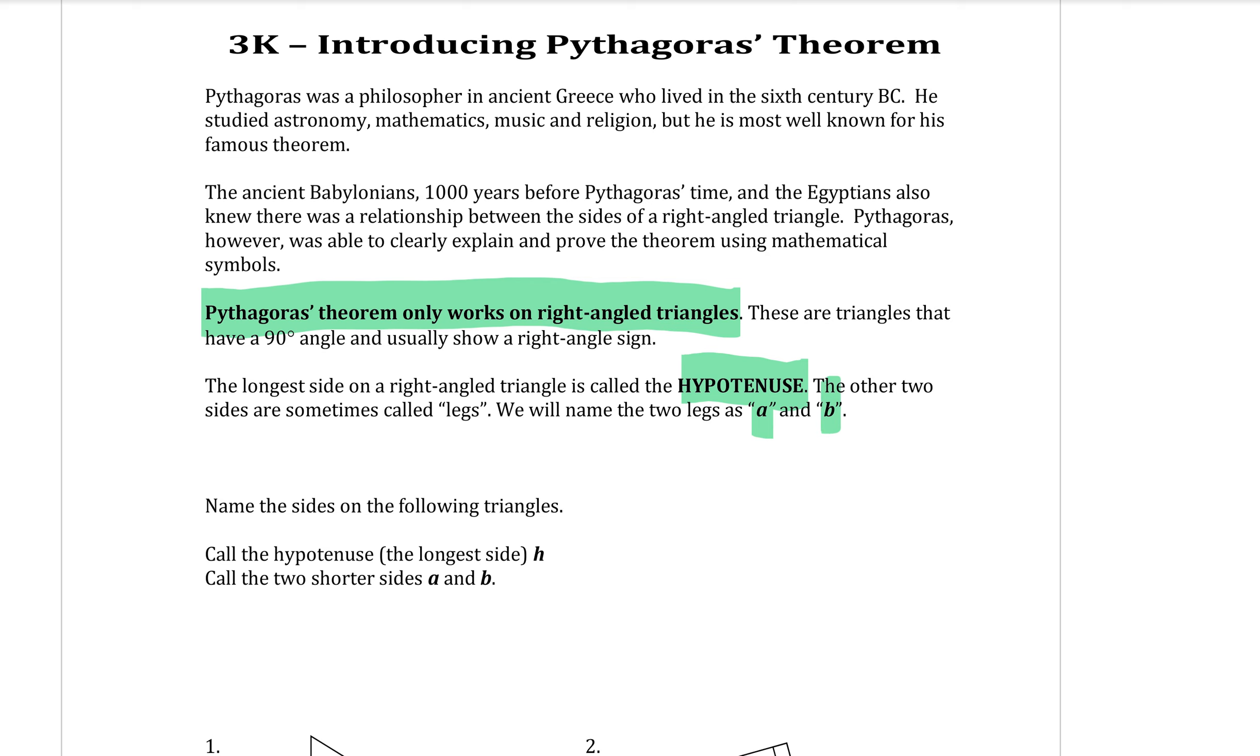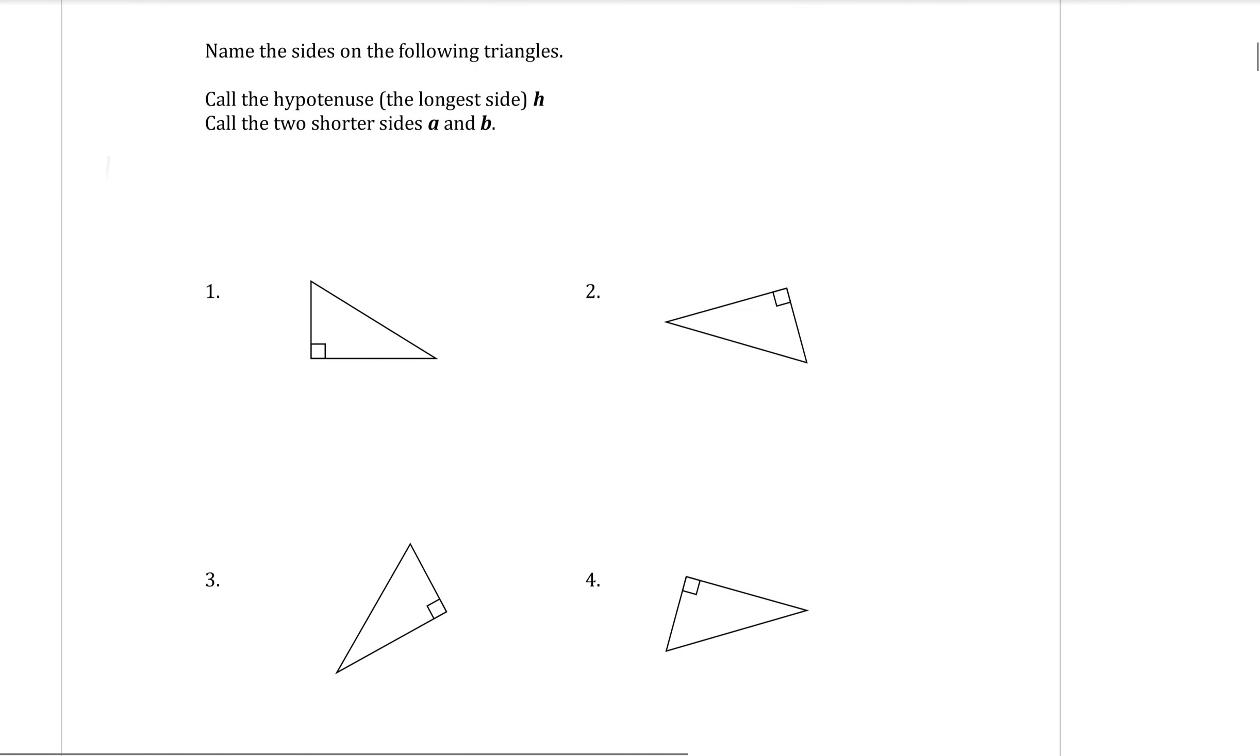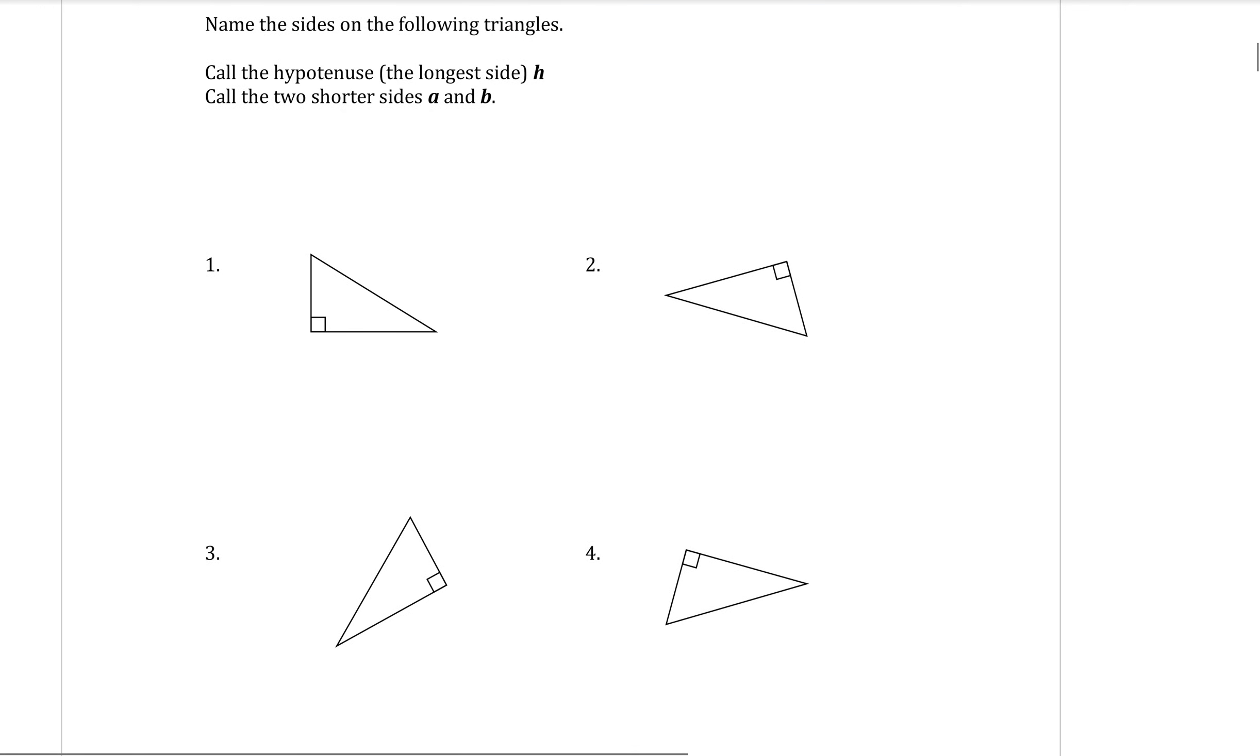So before we learn Pythagoras' theorem, we're just going to practice labelling the sides of a triangle. So the longest side, which is called the hypotenuse, we're going to call that the letter h. And the two shorter sides are going to be a and b.